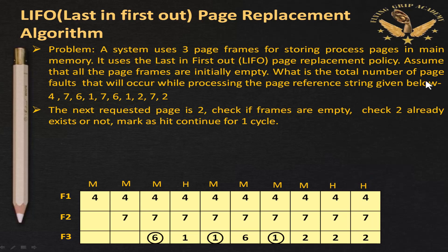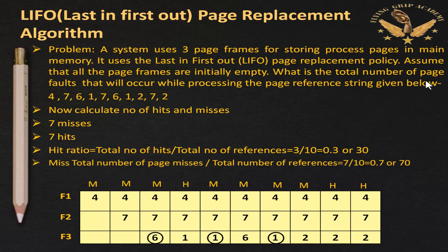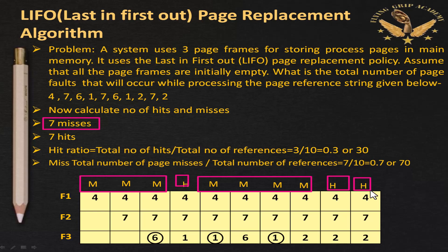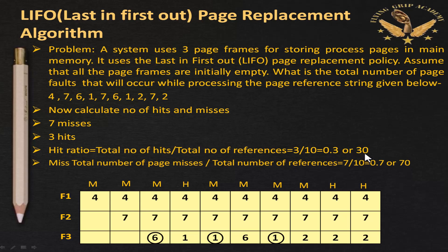For LIFO: total misses = 7, total hits = 3. Hit ratio = 3/10 = 0.3 or 30%. Miss ratio = 7/10 = 0.7 or 70%.